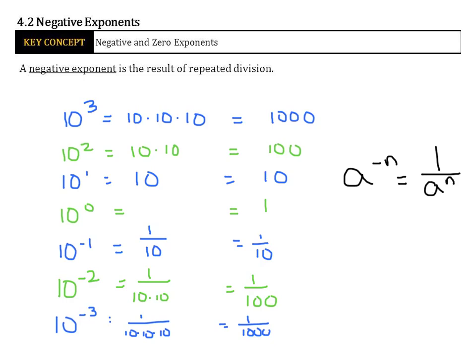In other words, 1 over 10 was really 1 over 10 to the first. 1 over 100 was 1 over 10 squared. And 10 to the negative 3 was 1 over 10 to the third.